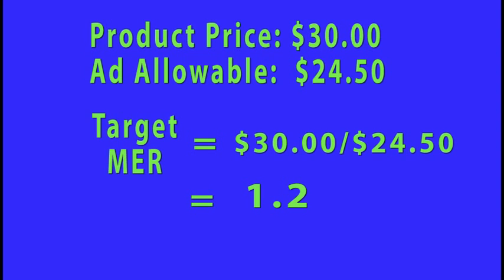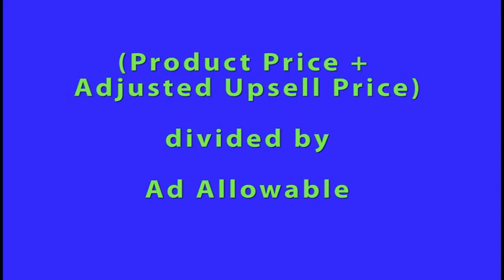Now, there are other ways that you can calculate an MER and get different numbers. Such as, instead of dividing your ad allowable into the product price, you can divide it into your product price and your upsell price adjusted for conversion rates.